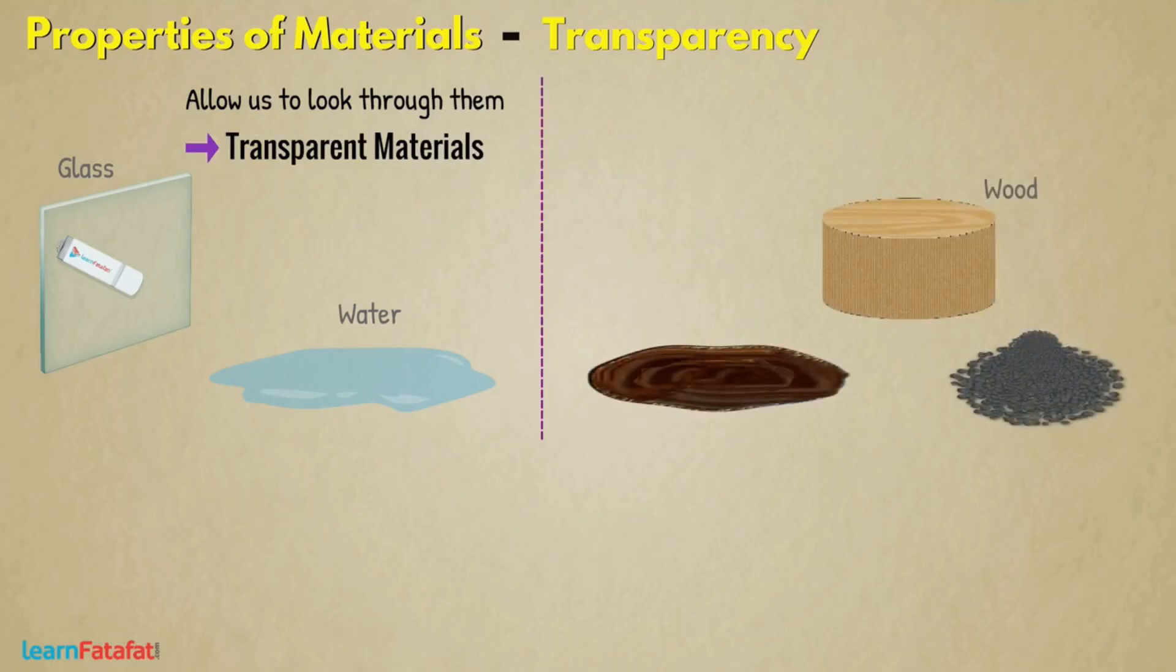Some materials such as wood, mud, and sand do not allow us to look through them. These are called opaque materials.